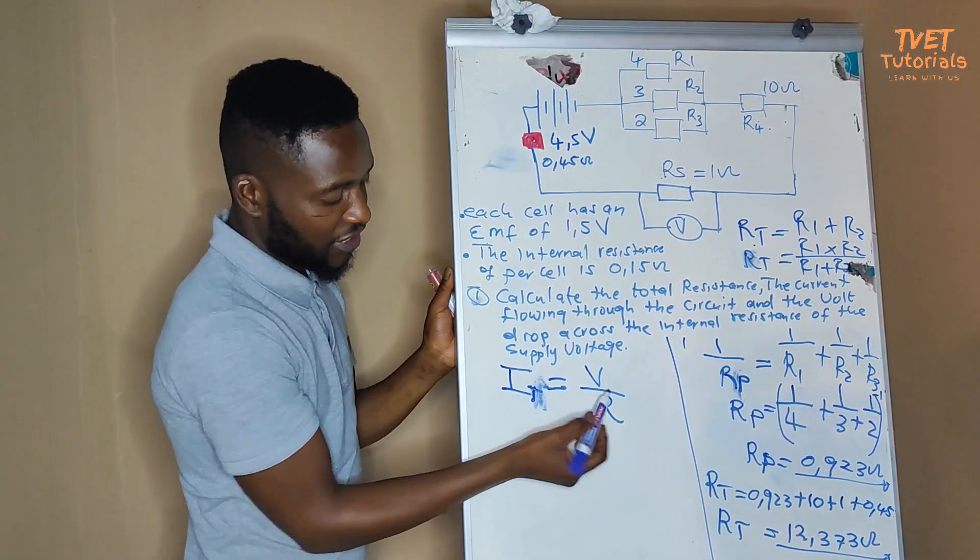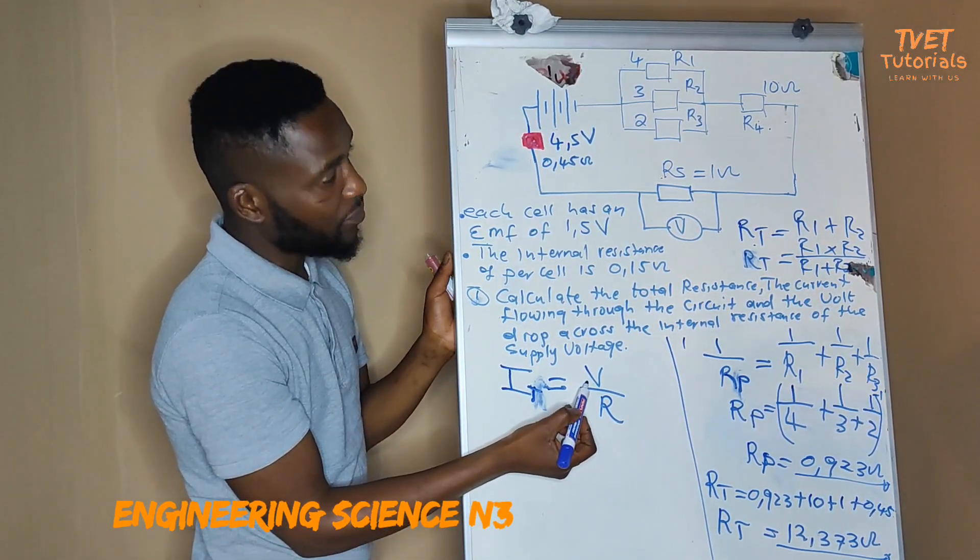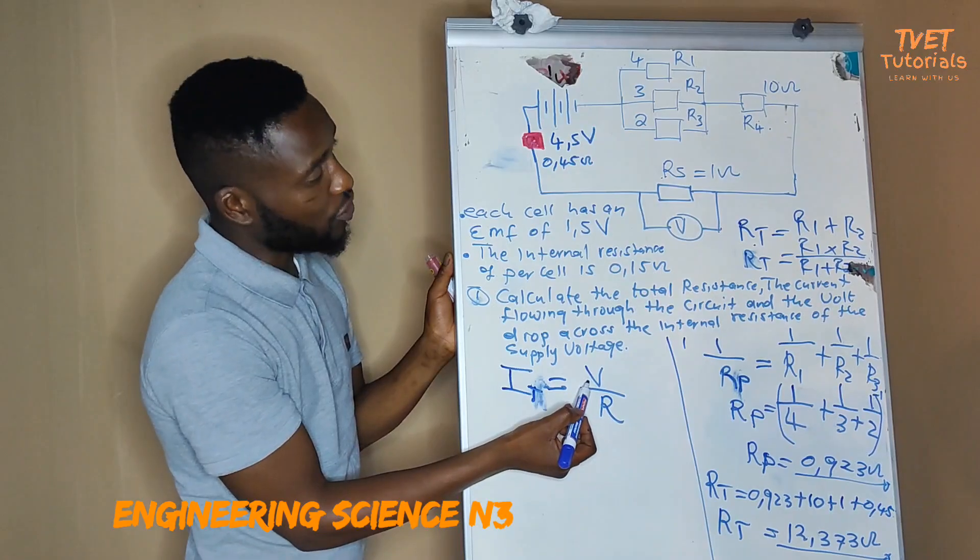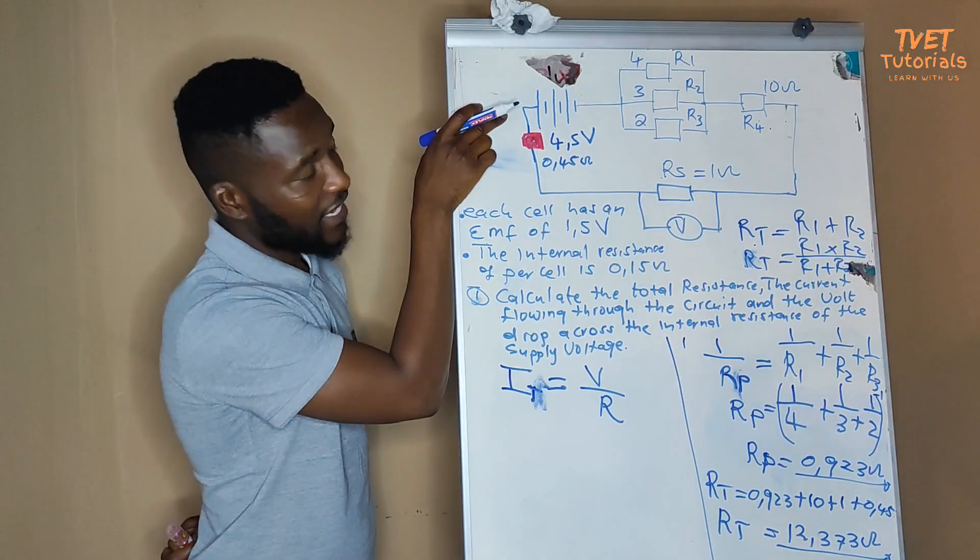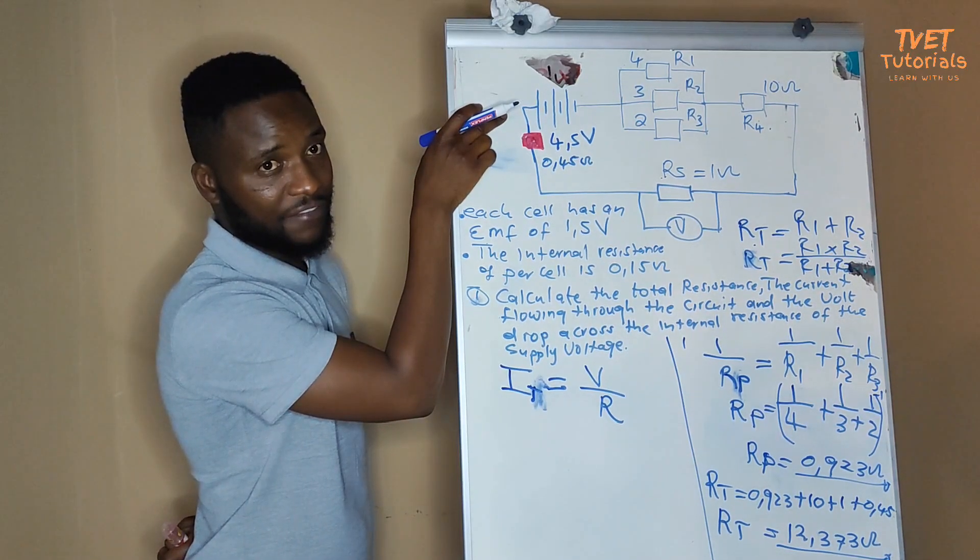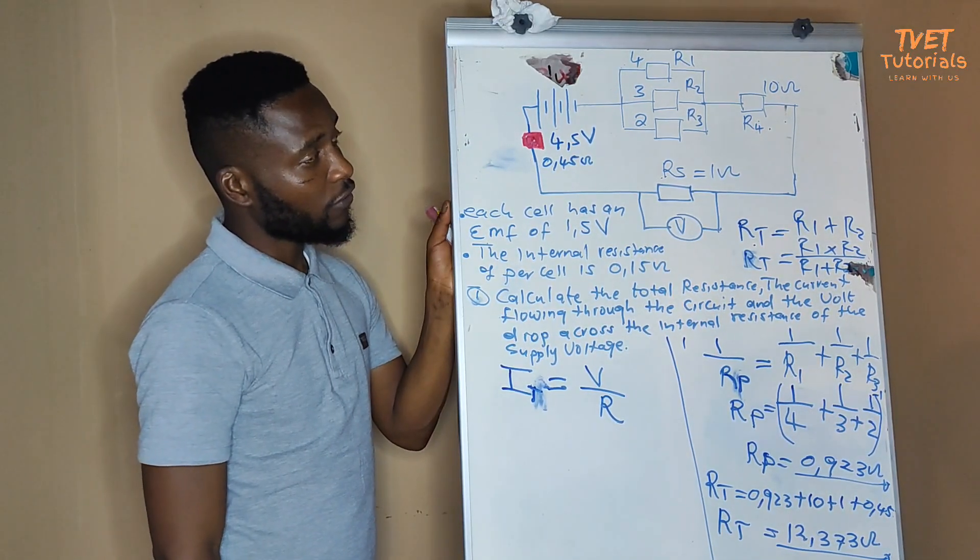The voltage V represents the total supply voltage to the circuit, which in this case is the total EMF of magnitude 4.5.